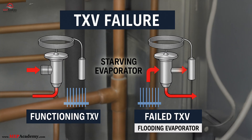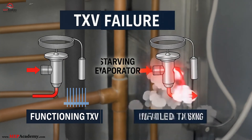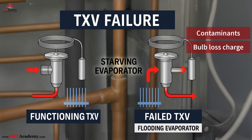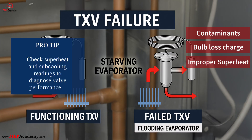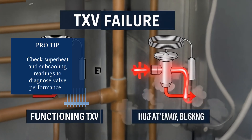Number two: The thermostatic expansion valve, or TXV, regulates the flow of refrigerant into the evaporator. When it fails, it can either starve the evaporator, leading to high superheat, or flood it, which risks damaging the compressor. Common causes: contaminants blocking the orifice, bulb sensing line losing charge, or overtightened superheat adjustment. Pro tip: check superheat and sub-cooling readings to diagnose valve performance.